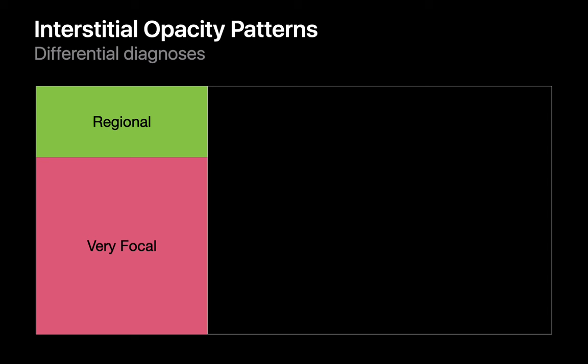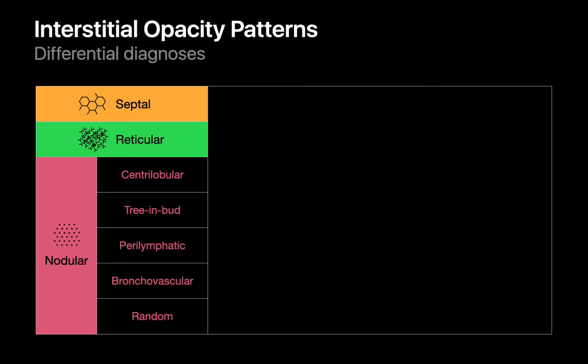Interstitial opacities occur when the fine latticework of the lung becomes thickened in a regional or very focal pattern due to irritation, inflammation, impaired fluid drainage, or the presence of cancer cells. The two regional patterns are a septal interstitial pattern and a reticular interstitial pattern. The very focal pattern is better known as a nodular interstitial pattern, which has five subtypes: centrilobular, tree-and-bud, perilymphatic, bronchovascular, and random interstitial patterns. Each is associated with a slightly different differential diagnosis.